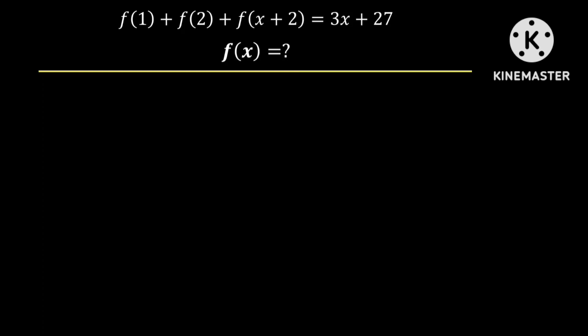If you look at this functional equation carefully, you will notice that f of 1 and f of 2 are just numbers. And so the image of the linear function x plus 2 is also linear, and therefore it is obvious that f is also a linear function. So we can let f of x be the linear function ax plus b, where a and b are real numbers with a not equal to 0.